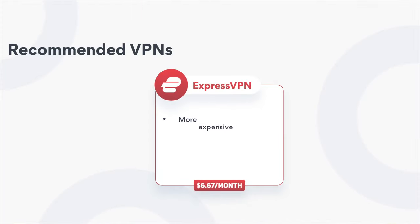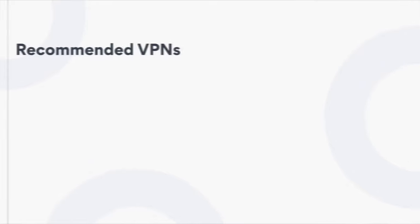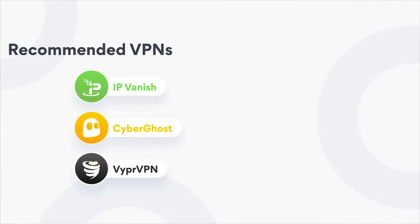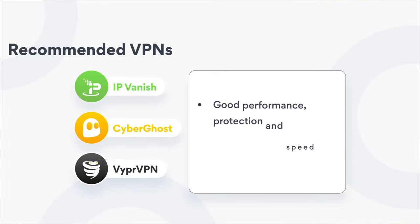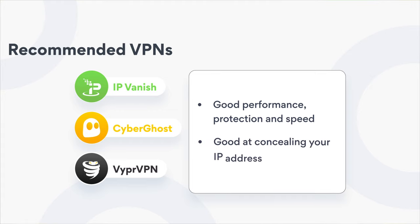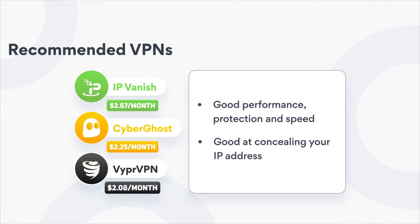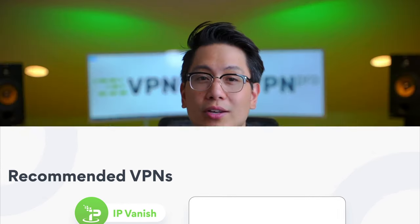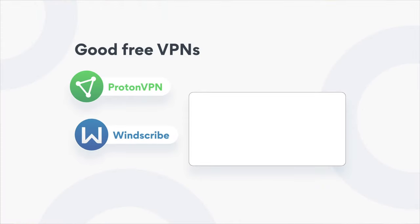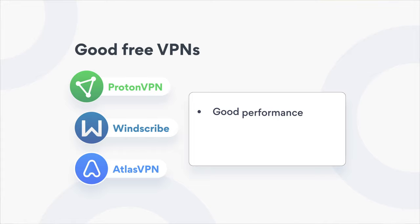ExpressVPN is more expensive and doesn't have a trial, but it's one of the best VPNs in terms of quality. IPVanish, CyberGhost, and Viper VPN are also good options with good performance, protection, and speed. They are all good at concealing your IP address, but those are paid options. Some free VPNs can also boast good performance and the ability to change your IP address effortlessly. With ProtonVPN, Windscribe, and Atlas VPN, you can be sure you don't have to pay a penny to change your IP address.